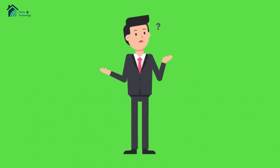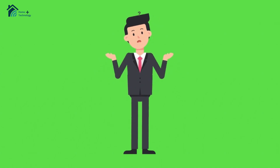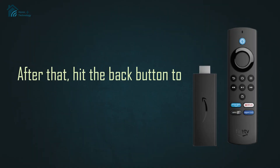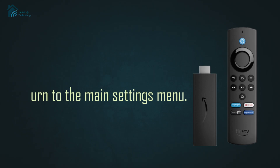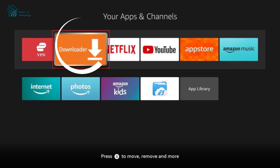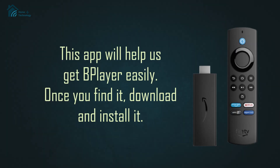Don't worry, it's completely safe — just make sure you're using trusted sources. After that, hit the Back button to return to the Main Settings menu. Next, go to the Search function and type in Downloader. This app will help us get B-Player easily.